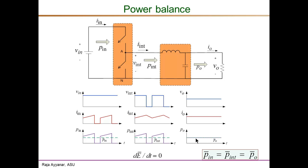During the on interval we draw more power than the output requires — the balance goes to increase the stored energy in the inductor and capacitor. The inductor current is rising during the on interval so its stored energy is increasing, and that increase comes from the extra power drawn from the input. During the off interval there is no input power; the inductor current falls and the energy stored in the inductor and capacitor supports the output power.